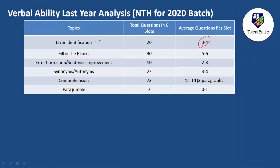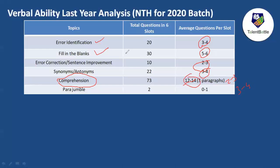Based on previous year analysis: three to four questions on error identification; five to six questions on filling in blanks — articles, prepositions, conjunctions, subject-verb agreement, adverbs, adjectives; two to three questions on error correction or sentence improvement; three to four questions on synonyms and antonyms. Most importantly, comprehension — sometimes two or even three paragraphs with three to four questions each — means 12 to 14 questions from reading comprehension. Para jumbles: one to two questions, sometimes zero.